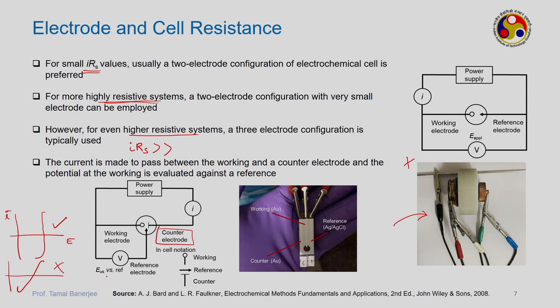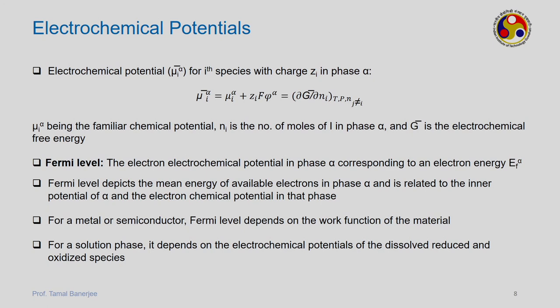In our lab, the counter electrode is gold, the reference electrode is silver/silver chloride, and the working electrode is also gold. Current is made to pass between the working and counter electrodes, while the potential of the working electrode is evaluated against the reference — which remains an idealized non-polarized electrode. This is the three-electrode assembly and the way different current and voltage measurements are performed.